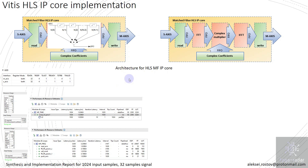Both IP cores are fully pipelined, with an initiation interval of one clock cycle. The iteration latency for the time domain is quite short, unlike the frequency domain, because additional time resources are required to perform all FFTs.